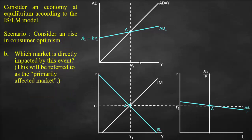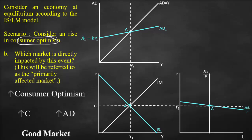Part B asks which market is directly impacted by this event — referred to as the primary affected market. In our scenario, we have higher consumer optimism. This results in higher consumption, which affects the aggregate demand curve, giving us a higher aggregate demand. Consequently, it affects our goods market.